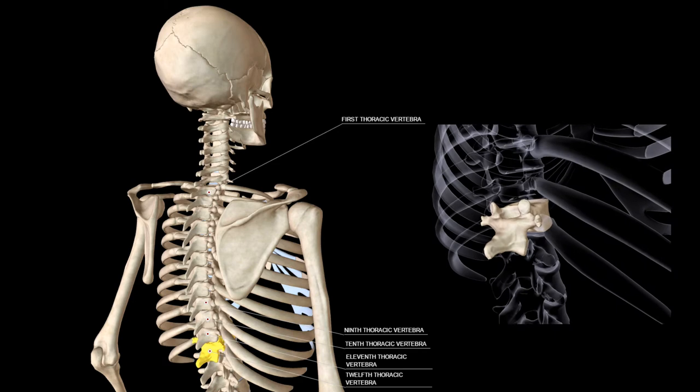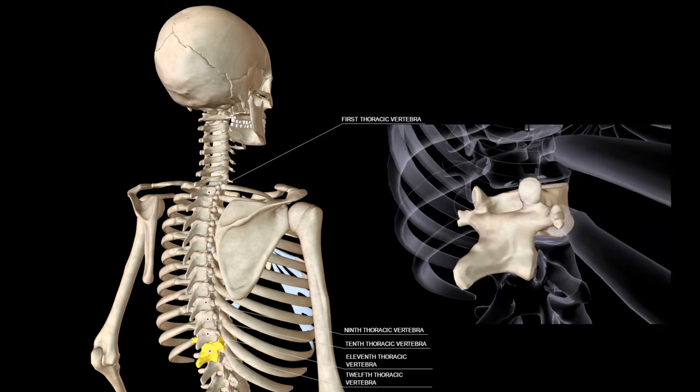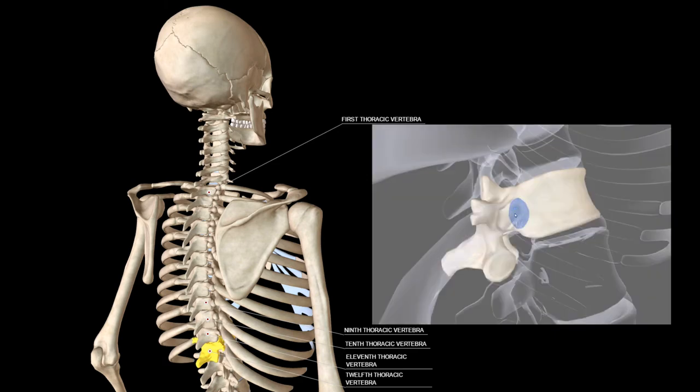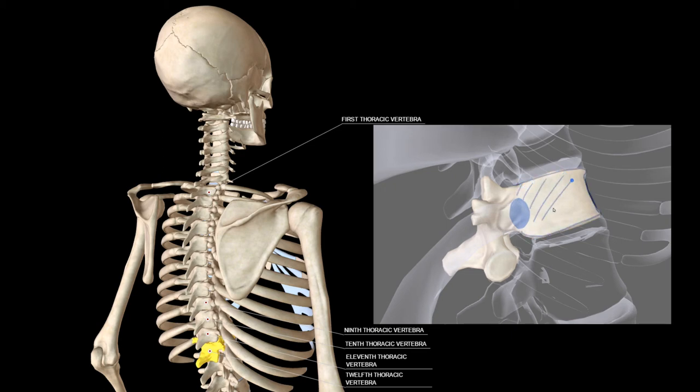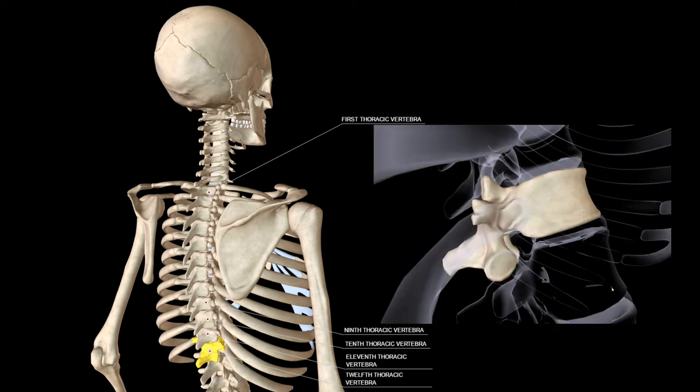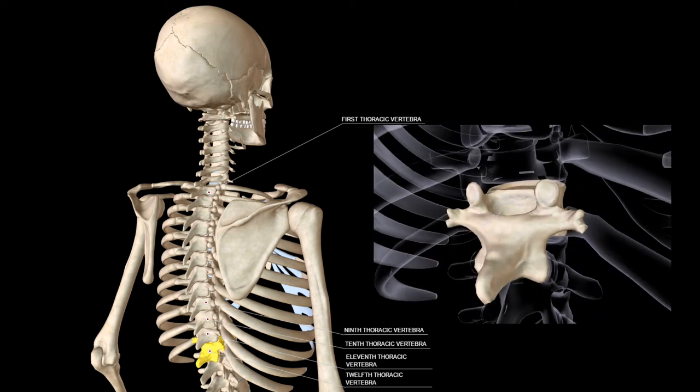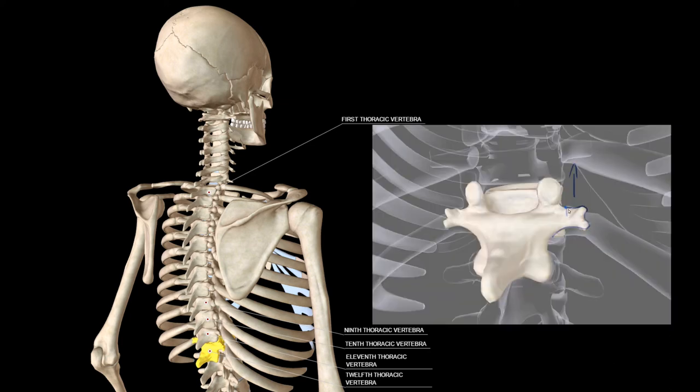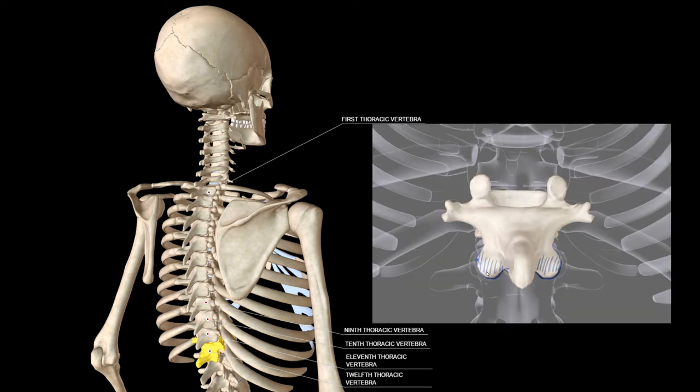The 12th thoracic vertebra just like 11th articulates with the head of the 12th rib only. The facet is roughly circular in shape and it lies below upper border of the body and extends over lateral aspect of the pedicle. The body is large and approximates closely to lumbar type. Transverse process is small and insignificant and it is not marked by an articular facet. It is subdivided into superior lateral and inferior tubercles. The inferior articular processes are turned laterally and articular facets are convex from side to side like those of a lumbar vertebra.